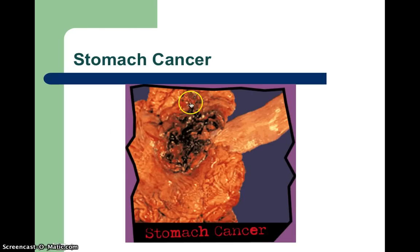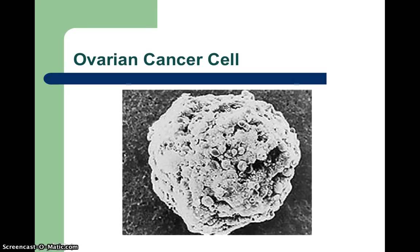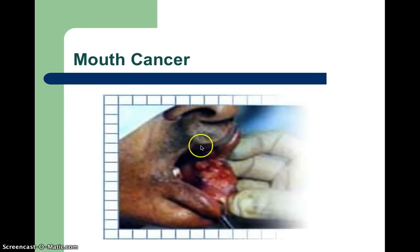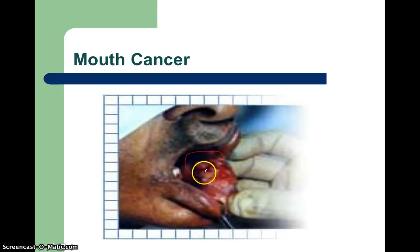All sorts of treatment options — whether it be chemo, radiation, surgery, things like that. That's a little picture of ovarian cancer, an ovary surrounded by some cancerous cells. And then finally, this is mouth cancer. What you see here is the inside of a person's mouth and it's rotting. Sometimes this tissue gets so bad that a hole forms, which can really be detrimental to somebody. And sometimes if the cancer gets bad enough in their mouth, their whole jaw falls off.